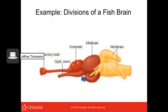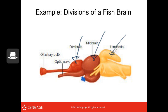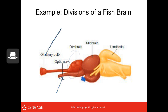Here is a fish brain showing the hindbrain, midbrain, and forebrain. Many structures we have in our brains also appear in other animals, but we have more mass especially in the forebrain. The optic nerve takes in visual information and the olfactory bulb takes in smell information.